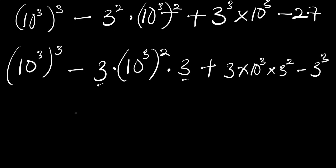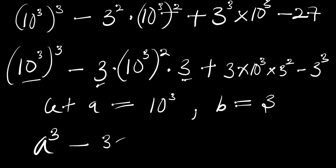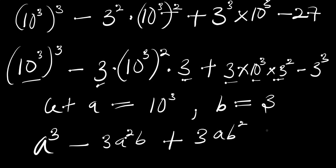At this point we can say: let a = 10³ and b = 3. So we are going to have a³ minus 3a²b plus 3ab² minus b³. This is exactly the expansion of (a minus b)³. If you expand that you get exactly what we have written down here.